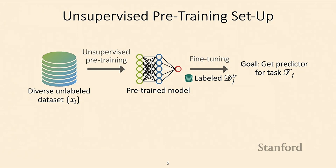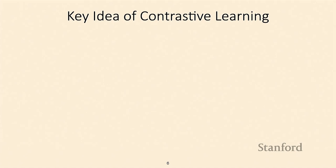The unlabeled dataset could be a bunch of images found on the internet, a bunch of sentences or text, or something more domain-specific — for example, if you're in an education domain, maybe it's a lot of student solutions to a problem but without feedback or labels on those solutions. Today we'll be talking about contrastive learning for unsupervised pre-training.